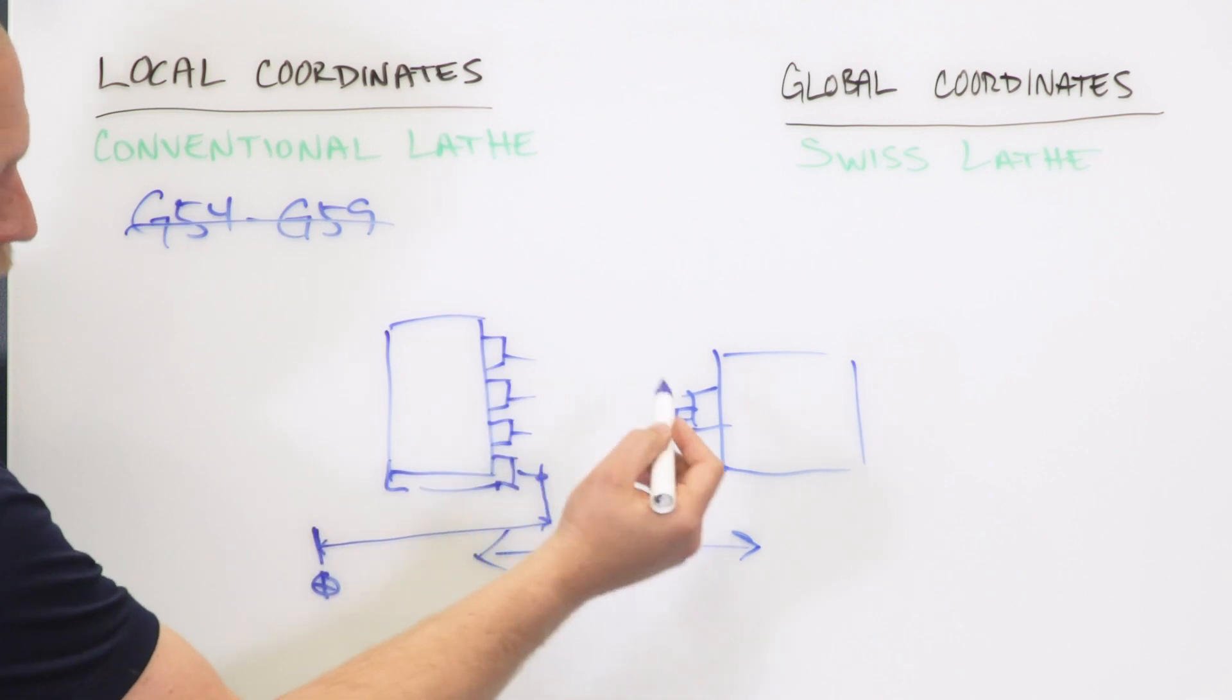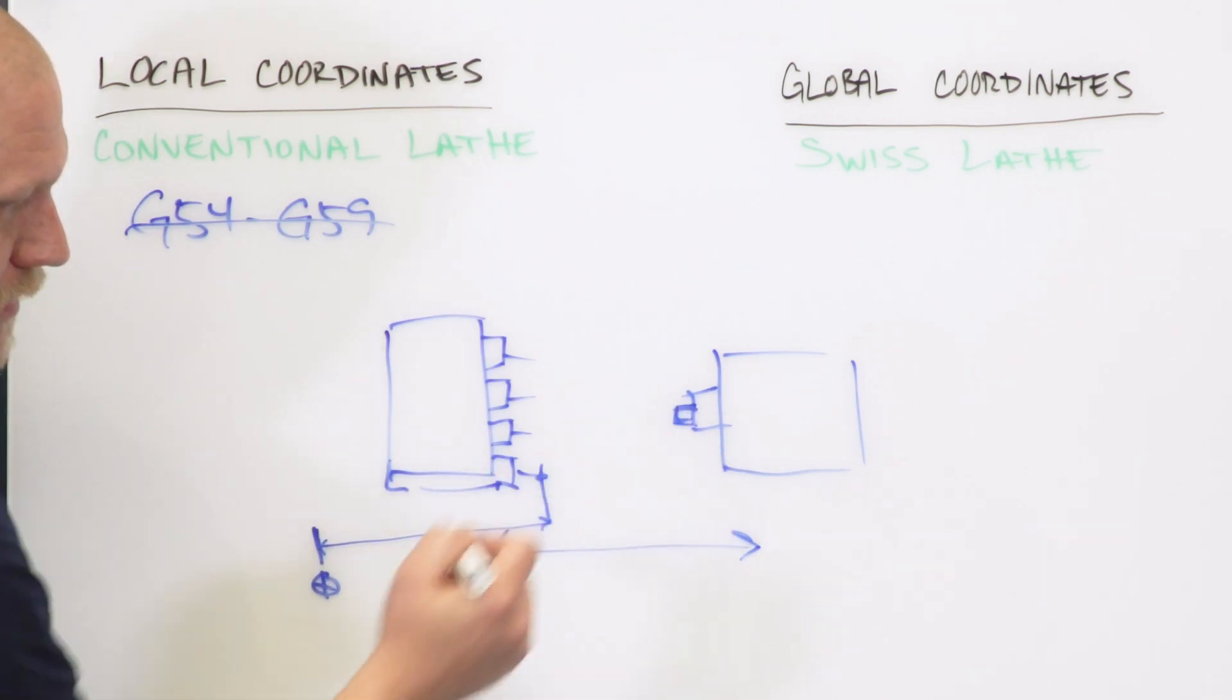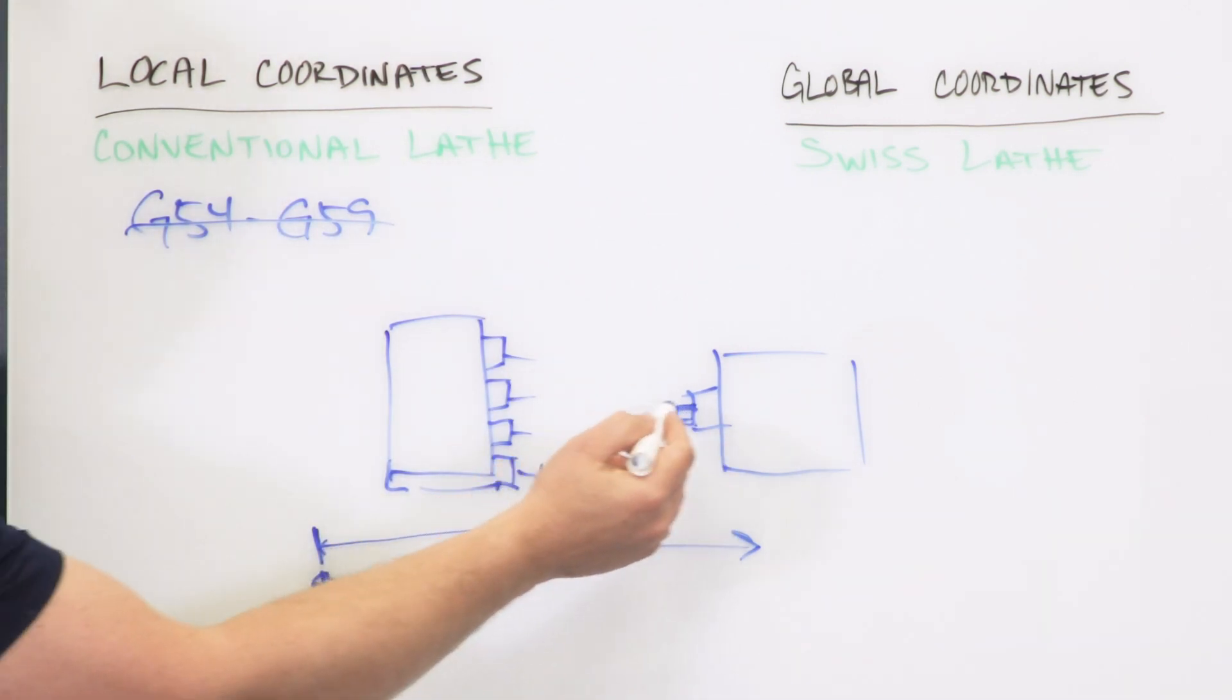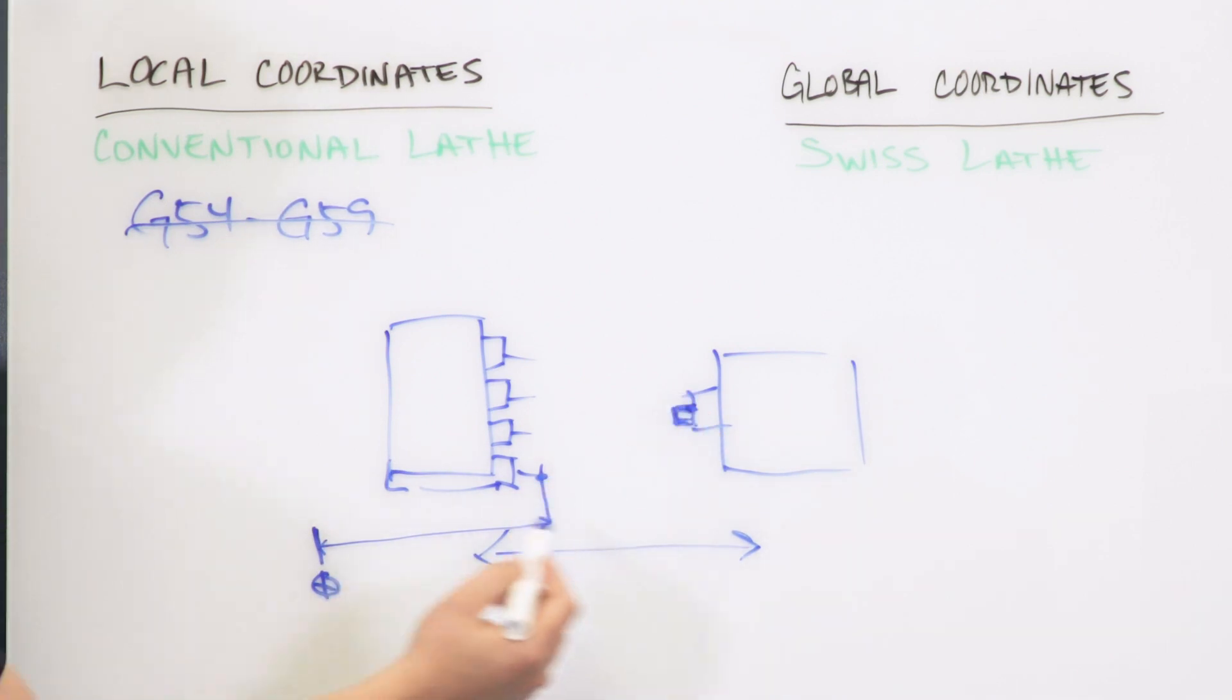On a Swiss style machine, it just changes the geometry. You would re-touch off your tool to each one of these, and it would measure from zero to here. Same thing with X-axis or Y-axis - it works the same way.